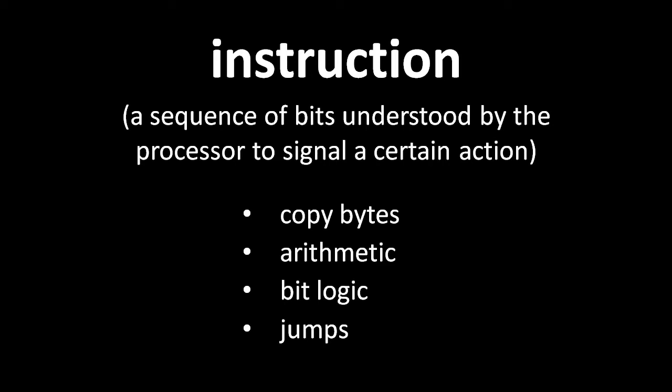The binary sequence which denotes any particular instruction is largely arbitrary, and so different CPUs understand different sets of instructions. For example, the binary sequence denoting an addition instruction on one CPU may not be a valid instruction on another CPU. In fact, one CPU may have instructions which another CPU does not have at all. For instance, some simpler CPUs have no instruction for performing multiplication, so code on those processors must perform multiple additions to get the same effect as a multiplication operation.